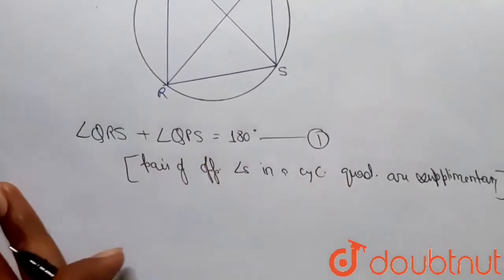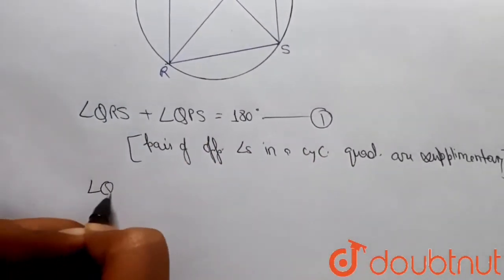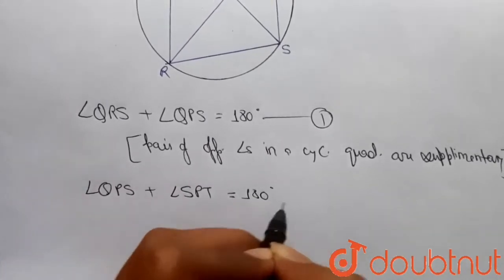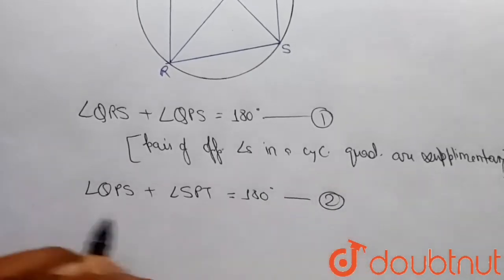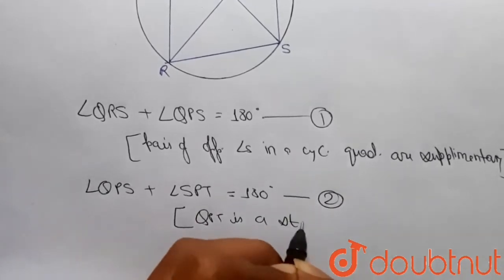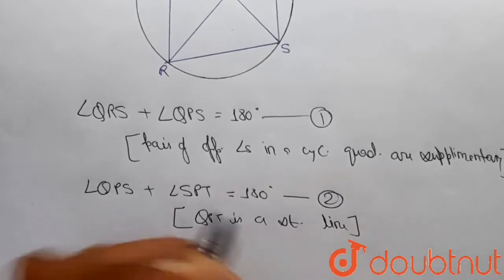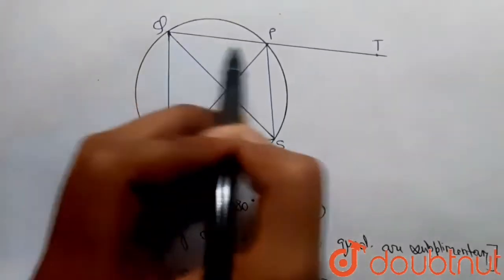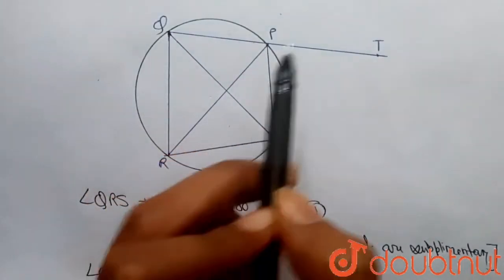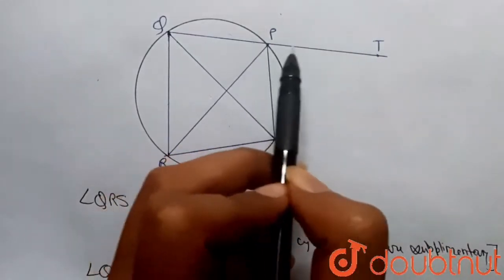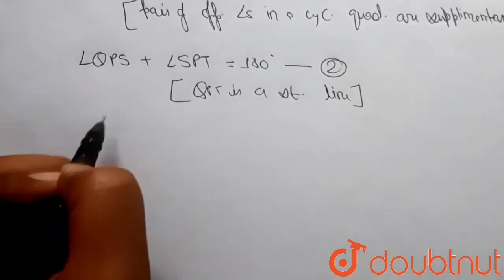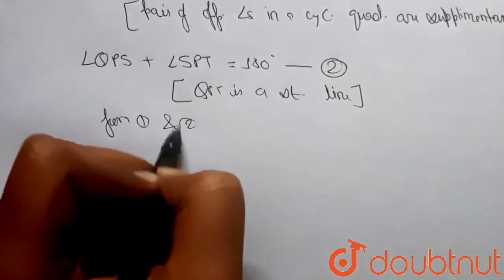Then I can write that angle QPS plus angle SPT will be equal to 180 degrees — let's call this equation two. I can write this because it is given that QPT is a straight line. Since QPT is a straight line, this whole angle will be 180 degrees, that is angle QPS plus angle SPT equals 180 degrees.